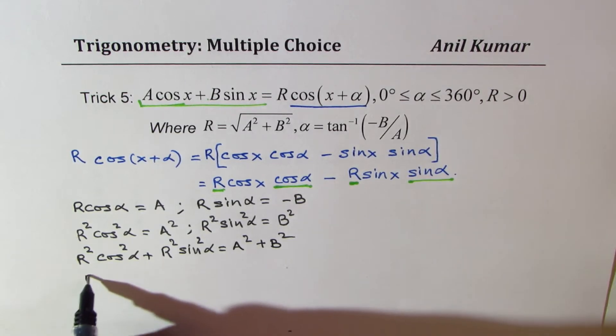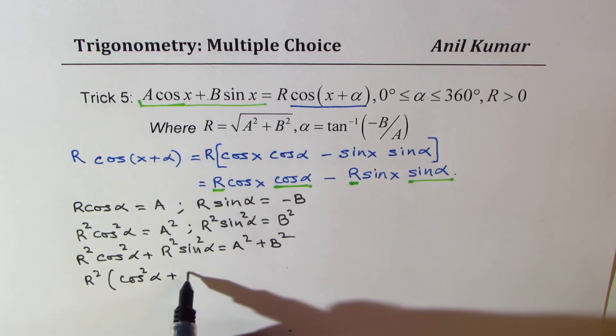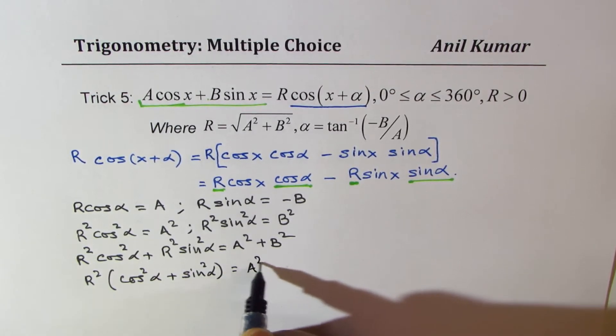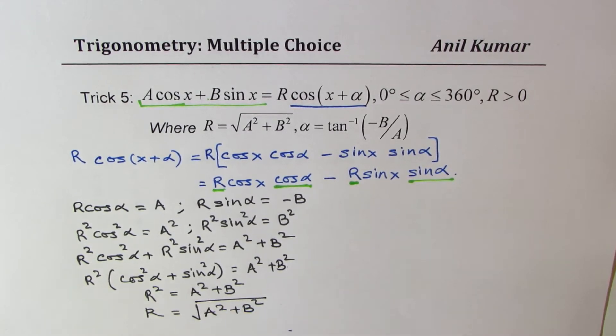From here, you can take R squared common. We get cos squared alpha plus sin squared alpha, which is 1, equals A squared plus B squared. That gives you R squared equals A squared plus B squared, or R is the square root of A squared plus B squared. That is how we get this part.